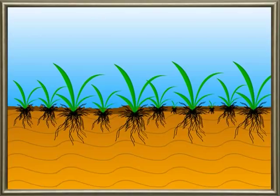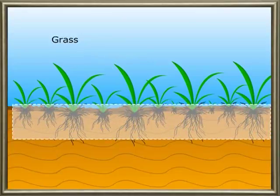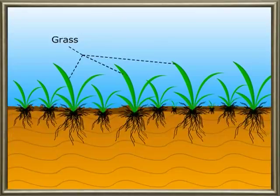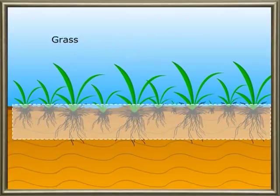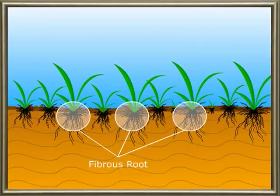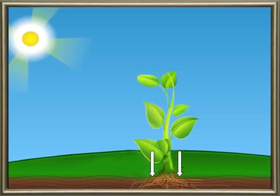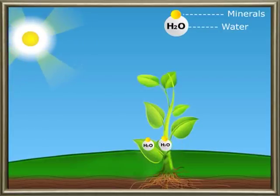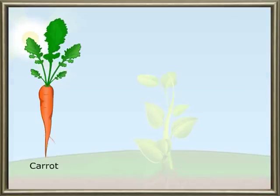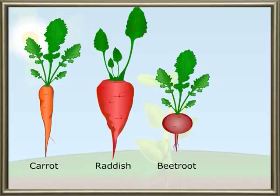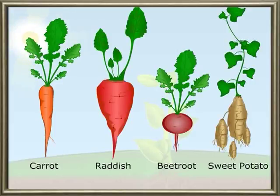In plants like paddy or grass, we find many small roots arising from the point where the stem touches the ground. These roots are called fibrous roots. They also form rootlets and all roots are similar — here there are no parent roots. Roots fix the plant in the soil and absorb water and minerals, supplying them to the leaf through the stem. Carrot, radish, beetroot, and sweet potato store food in their roots.